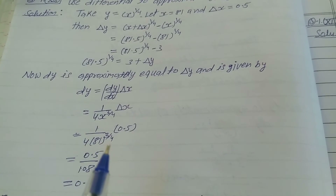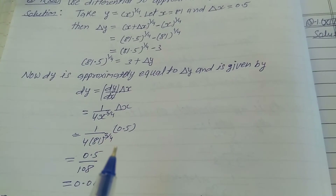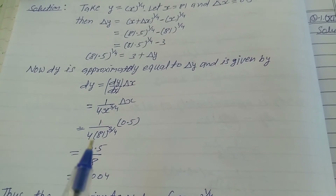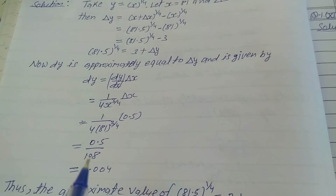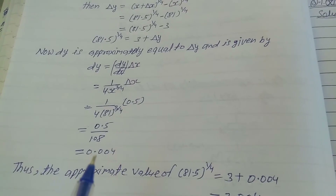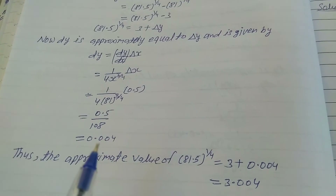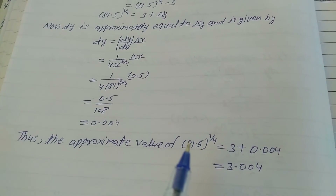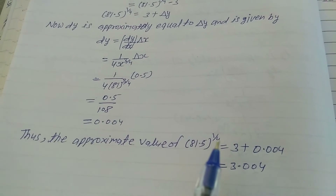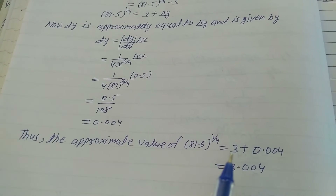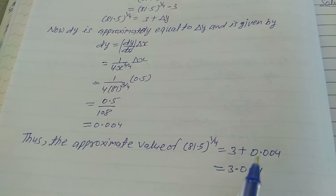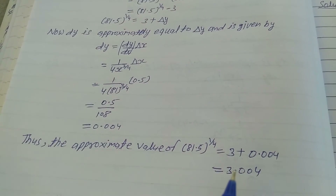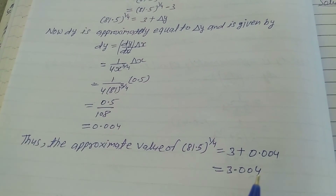Since 81^(3/4) = 27, and 27 times 4 = 108, we get dy = 0.5/108 = 0.005. Thus the approximate value of (81.5)^(1/4) = 3 + 0.005 = 3.005.